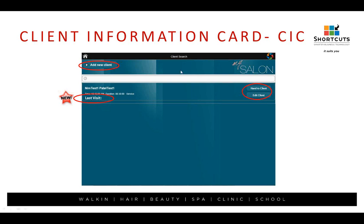When you log in, you'll see your client search screen. The client shown — Test One Patel — is the only client on the appointment book for the day. If you have more clients, they'll all show up here. You also have add a new client, so you can add clients to your Shortcuts database even if they're not getting a service yet. A new feature coming is the last visit — before it would just show the appointment time and duration, but now it's going to show their last visit as well.